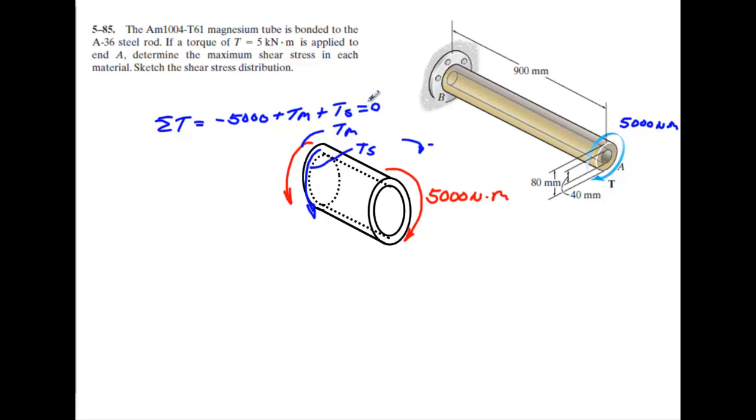So what we can go back to is, since I stated that the angle of twist has to be the same thing, that we know that theta, which is going to equal to the torque times the length over the polar moment of inertia times G, which is the shear rigidity.